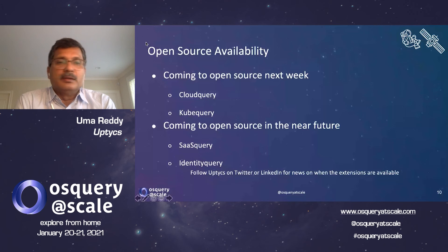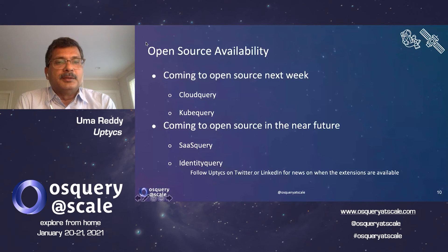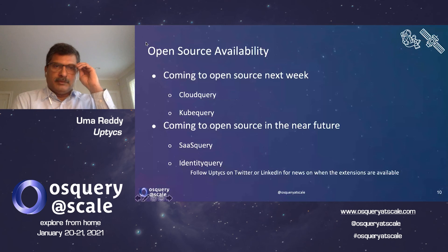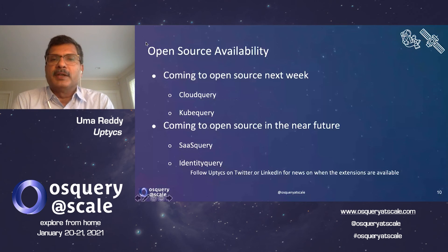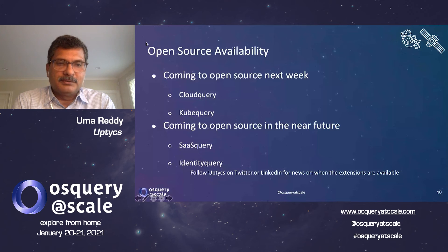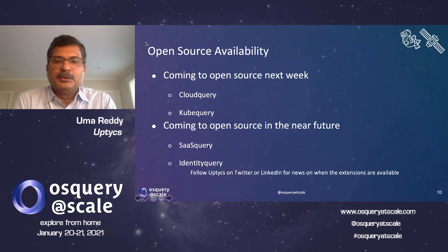At Uptix, we have been working for a while on Cloud Query and Kube Query as we see a lot of demand from customers to protect additional pieces of their infrastructure. We will be releasing both products into open source next week. In the near future, we will be building SaaS Query and Identity Query. These four products along with OS Query will cover the entire attack surface of an enterprise. Please follow us on Twitter or LinkedIn for news on when the extensions will be available as open source. Thank you.